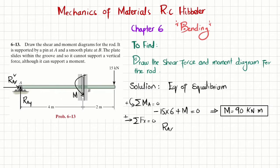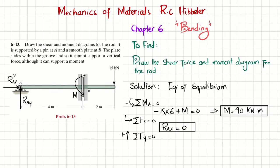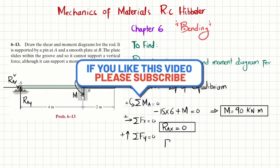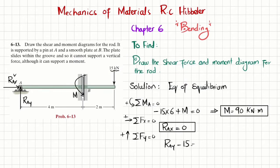We find RAy using the sum of all forces in the y-direction equals zero, taking upward as positive. RAy acting upward minus 15 kilonewtons acting downward equals zero, giving RAy = 15 kilonewtons.